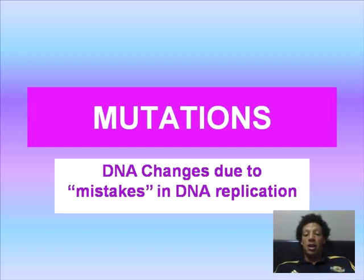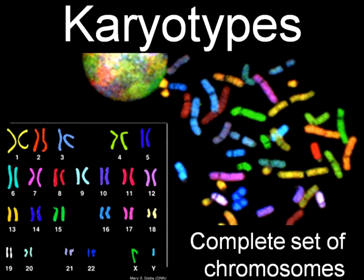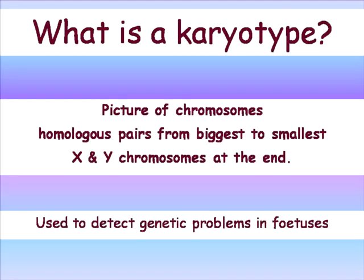Okay, here we go. Mutations — we're going to worry about chromosomal mutations. So we have karyotypes. What is a karyotype? It is the picture of chromosomes — the phenotype, the physical appearance of the chromosomes themselves. They are the homologous pairs arranged from biggest to smallest, with the X and Y chromosomes at the end. It's used to detect genetic problems in fetuses.